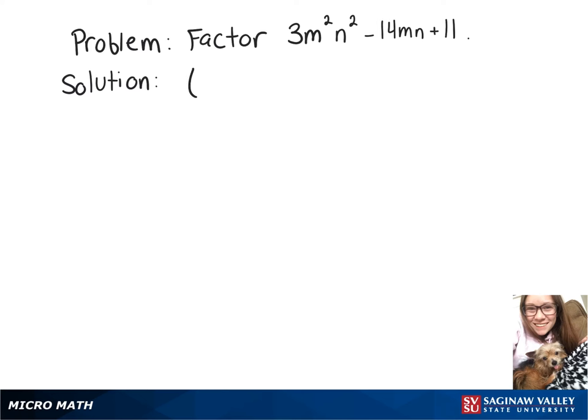First, we're going to factor the 3m²n². The only way we can split that is 3mn times mn. So we'll split that into parentheses like this, and then factor that plus 11 at the end.